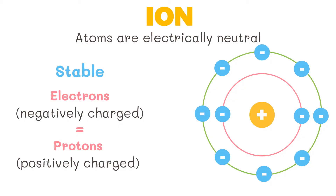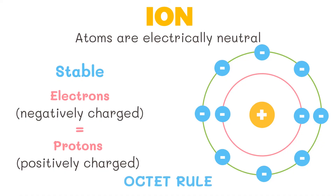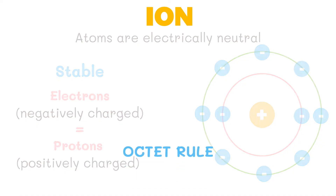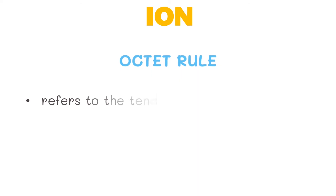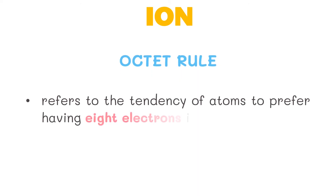Atoms need to lose or gain electrons in order to be stable. They become stable when their outermost shell or valence shell contains eight electrons, which satisfies the octet rule. The octet rule refers to the tendency of atoms to prefer having eight electrons in the valence shell. When atoms have fewer than eight electrons, they tend to react and form more stable compounds.